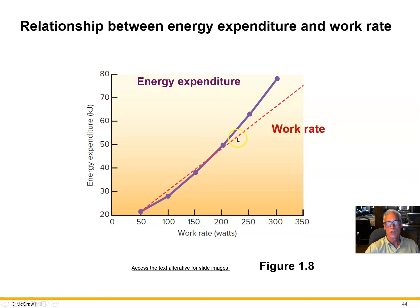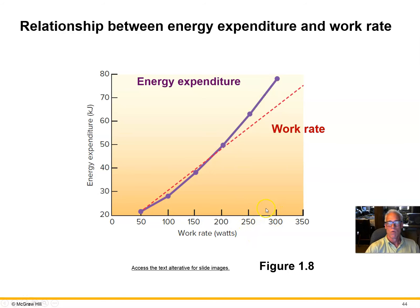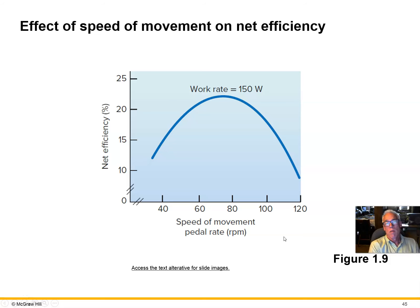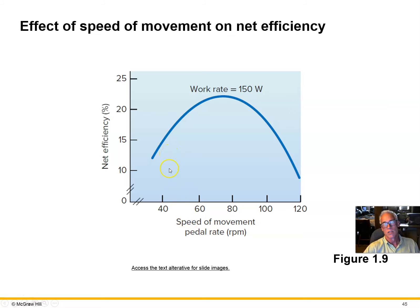It takes a greater increase in energy expenditure for every unit increase in work rate. That's the difference between the continued linear relationship we might wish were true — it's not. We're having to expend more and more energy for every increment in work rate.